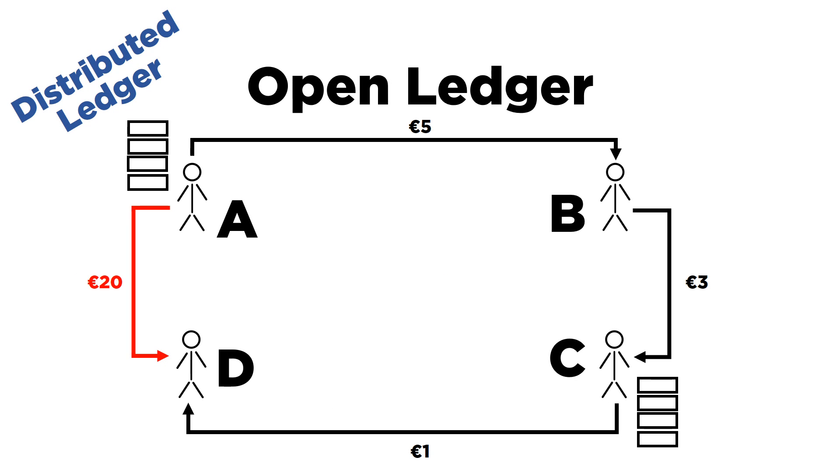But this also creates a problem. If anyone can have the copy of the ledger, then to maintain the accuracy, all the copies need to be exactly the same. Any change occurring in the open ledger needs to be recorded at the same time in all copies that the network participants possess.